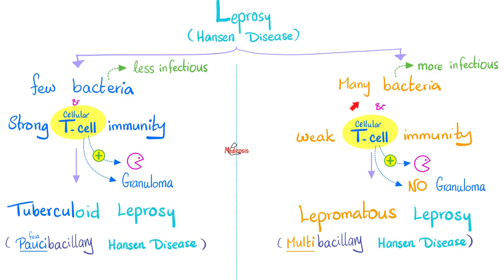If a disease has few bacteria, and the bacterium is Mycobacterium leprae, therefore we can call this paucibacillary Hansen disease. 'Pauci' means few; 'bacillary' because these are bacilli; Hansen disease is leprosy — leprosy has been known for thousands of years, but it was Hansen who discovered the causative organism. But lepromatous leprosy has many bacteria, therefore multibacillary Hansen disease.